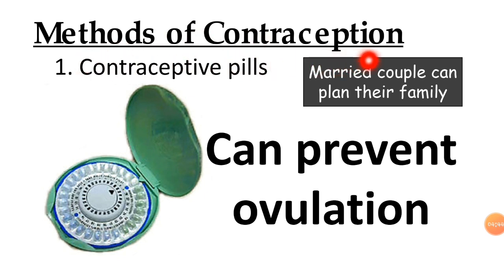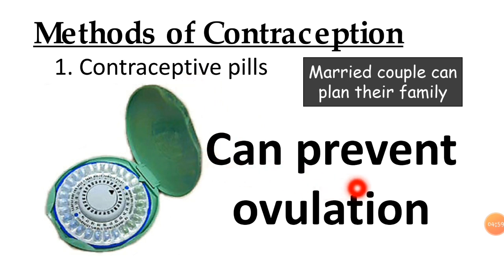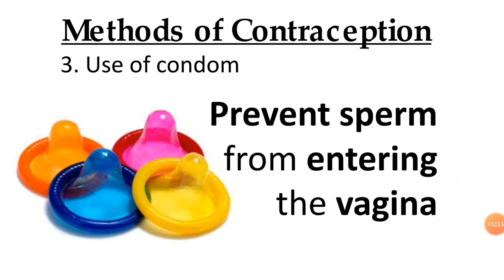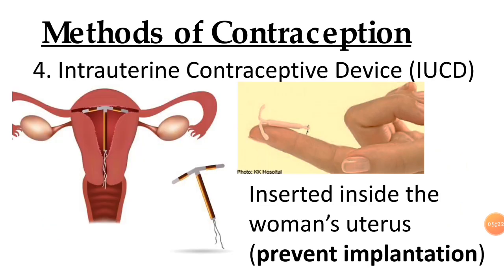Now for the methods of contraception. Contraception is important for married couples to plan their family. First, you can use contraceptive pills, which prevent ovulation. Next is the implant, which secretes hormones that prevent the ovary from producing eggs. Then, use of a condom to prevent sperm from entering the vagina. The intrauterine contraceptive device, IUCD, is inserted inside a woman's uterus to prevent implantation.